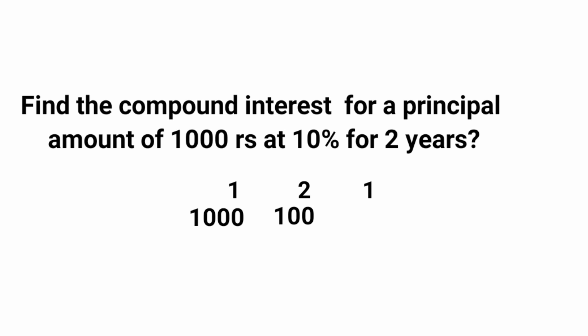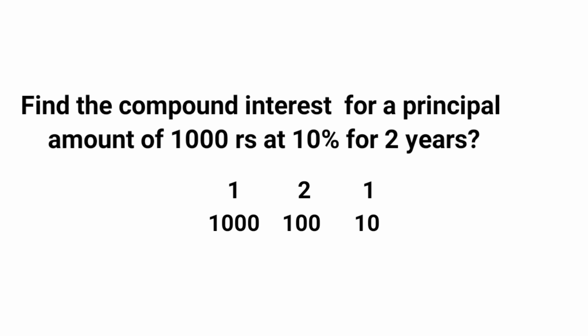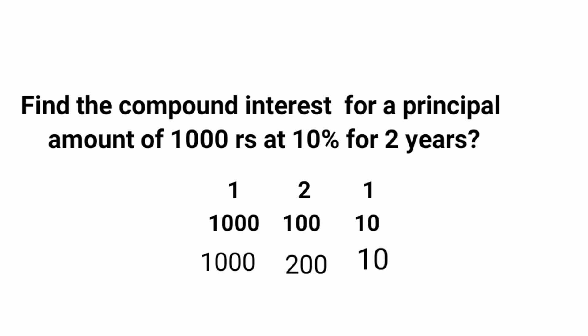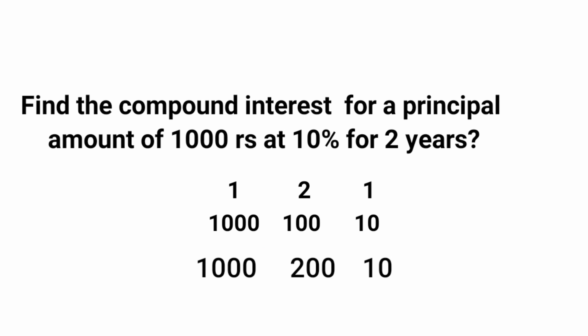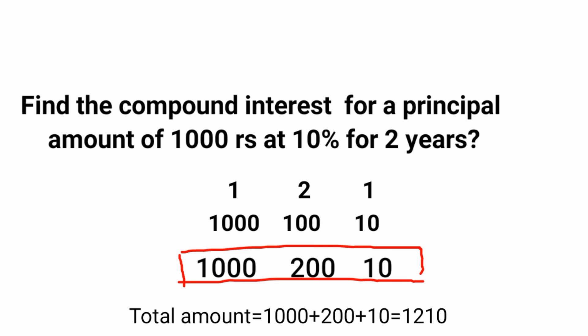Now take 10% of 100, which is 10, and write it in the third column. Multiply the numbers in each column: first column — 1 into 1000 gives 1000; second column — 2 into 100 gives 200; third column — 1 into 10 gives 10. To find the compound interest, leave the first column and add the rest: 200 plus 10 gives 210. To find the total amount after 2 years, add all columns: 1000 plus 200 plus 10 equals 1210.